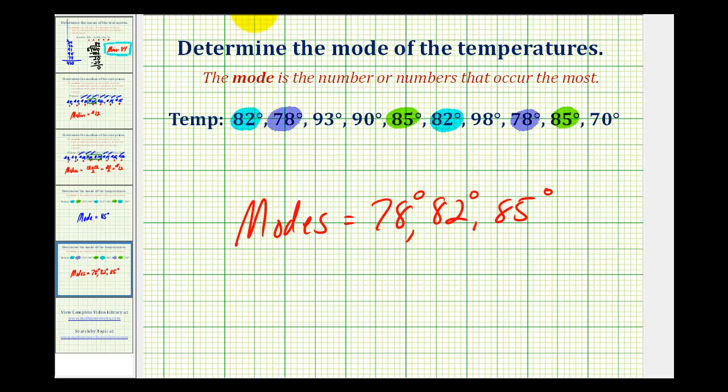And that's how you determine the mode of a given data set. Now if the data set is rather large, I would recommend putting the data in order from least to greatest because it does make identifying how many times a data item occurs much easier.